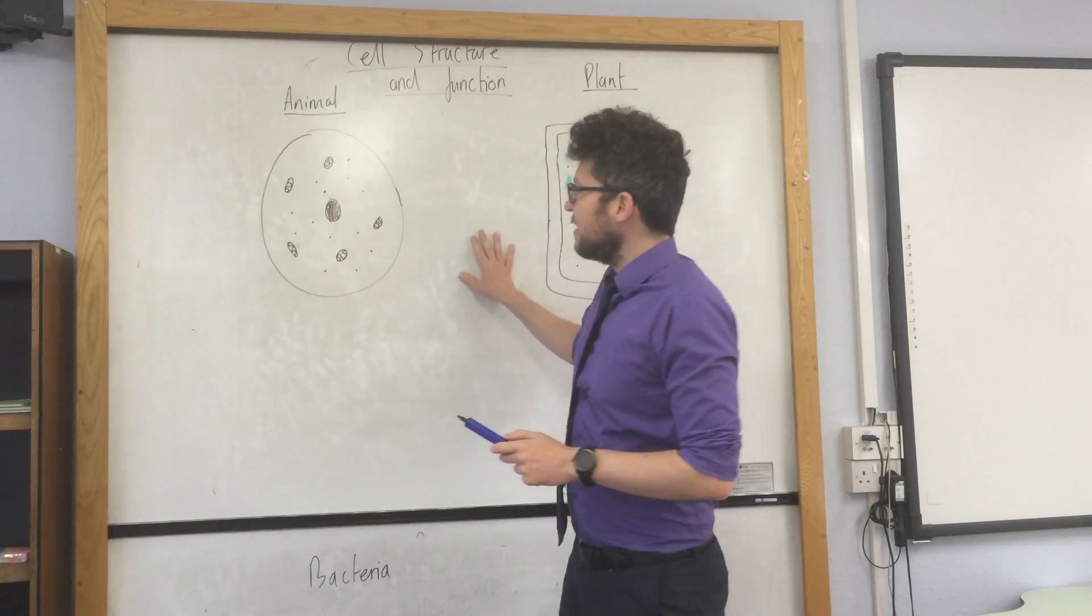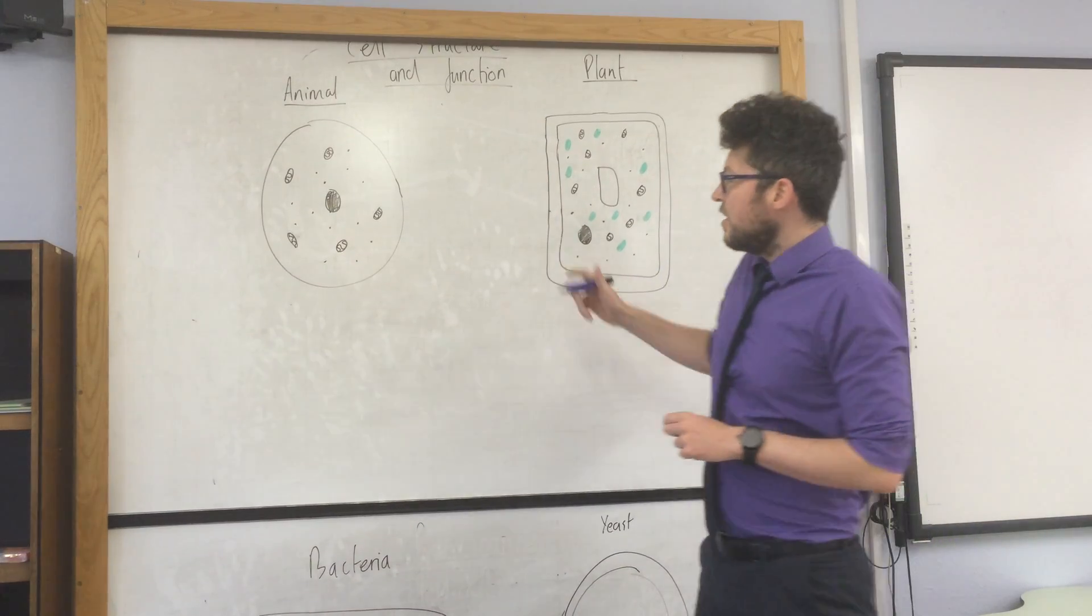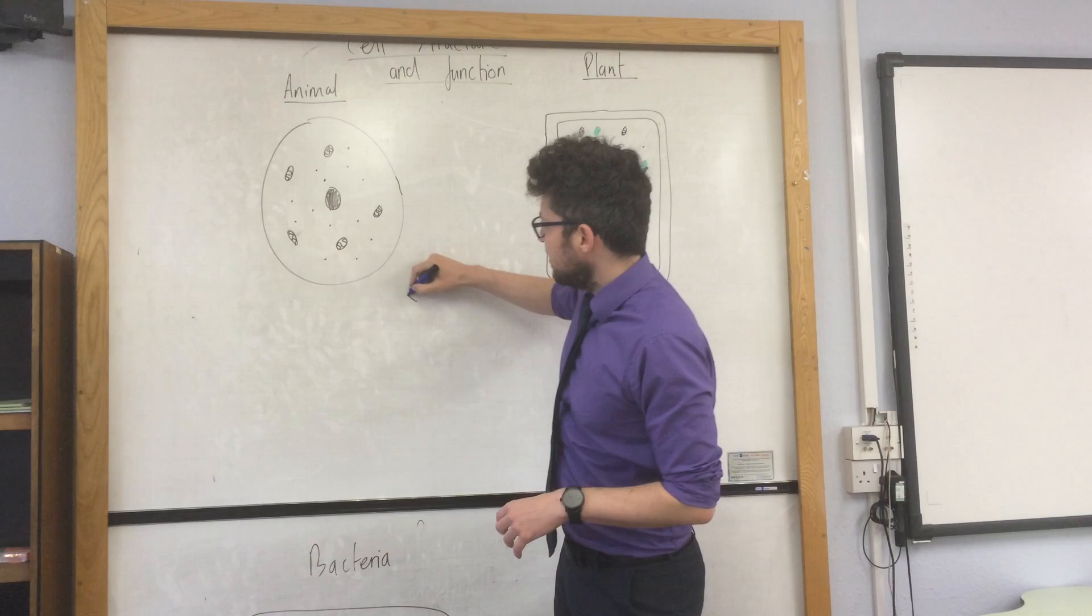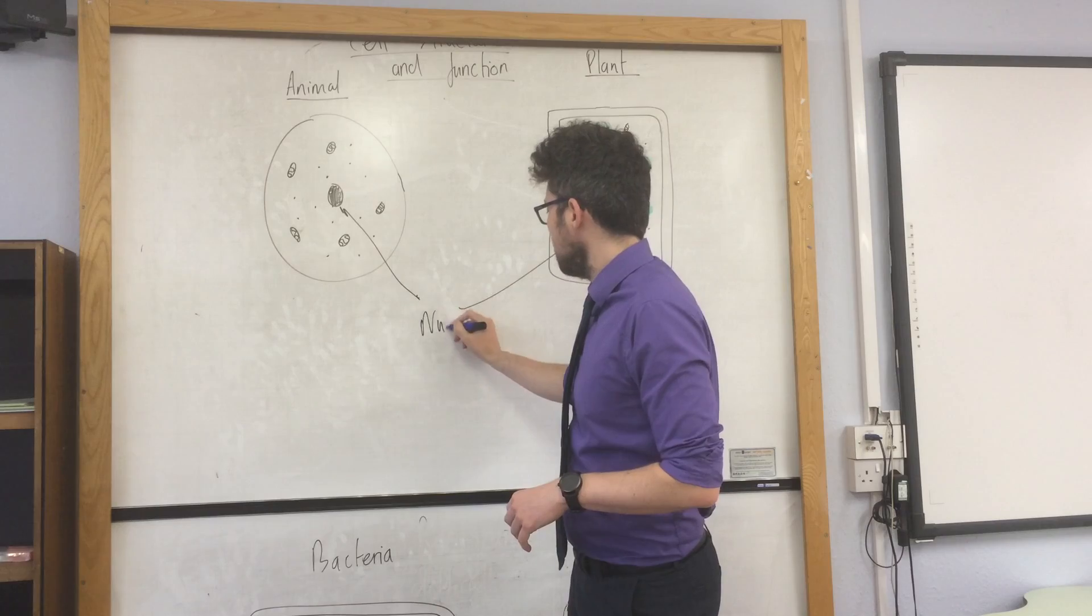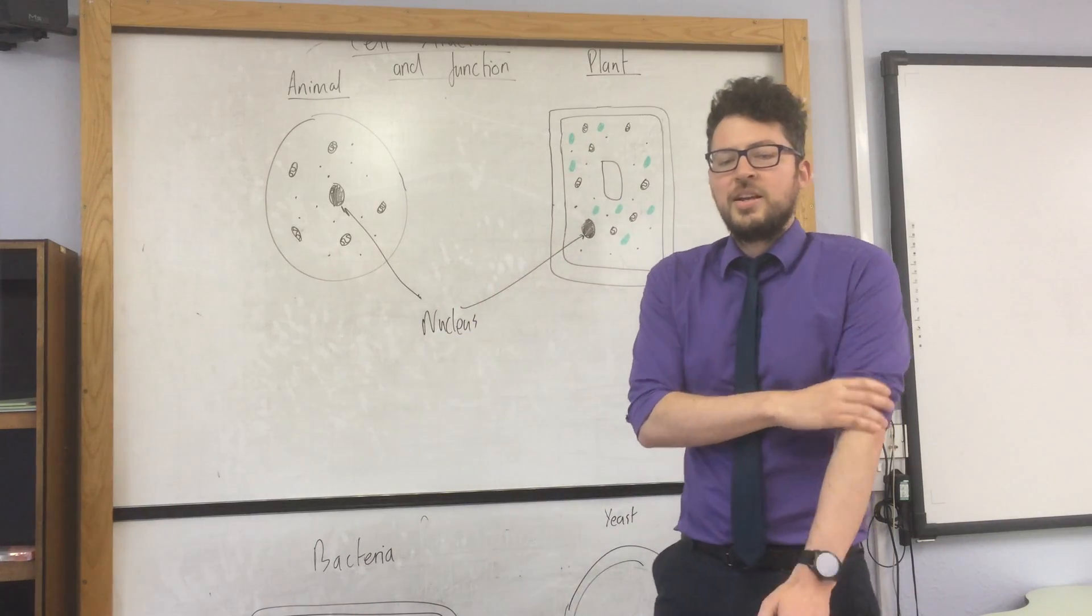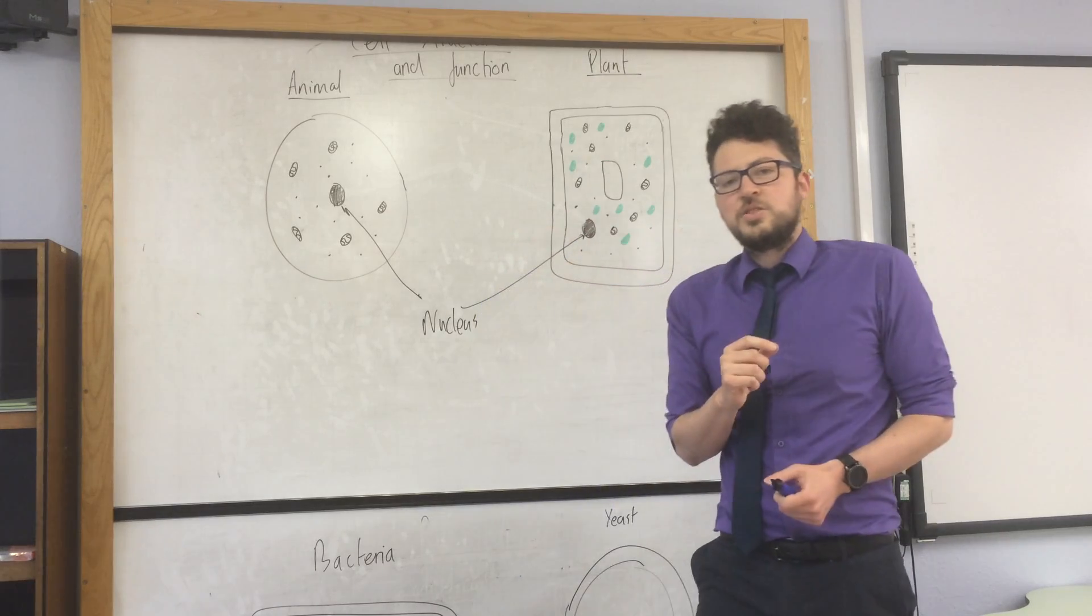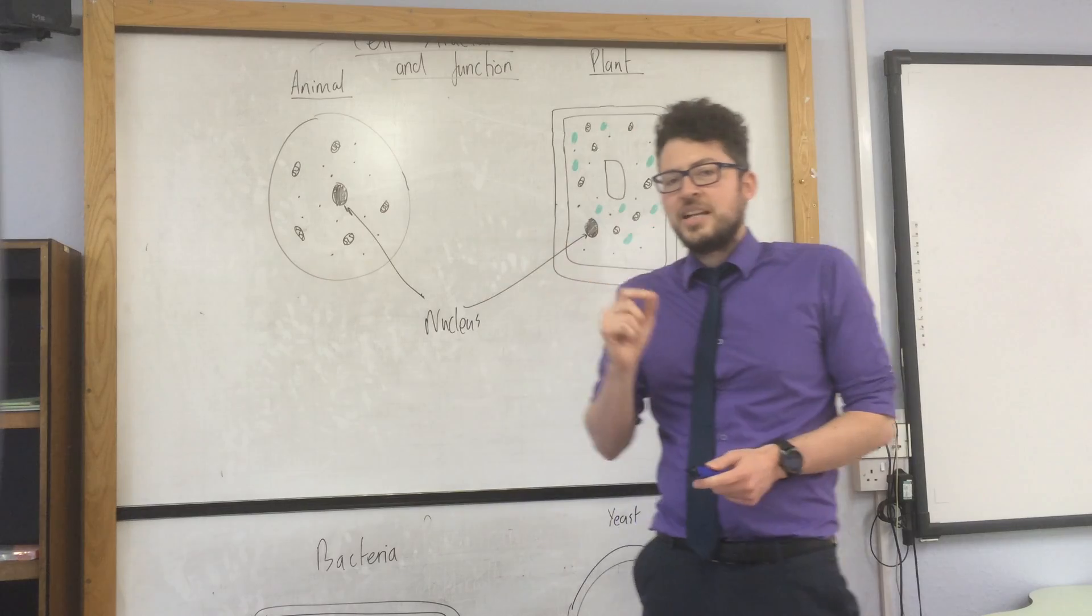I'm just going to go through the organelles contained in animal and plant cells. The first one that you need to know is the nucleus. Both animal and plant cells contain a nucleus. The function of it is to control the activity of the cell and it contains the genetic information.